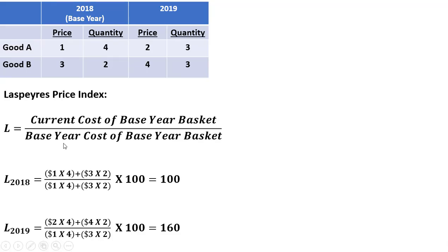And then in the denominator, it's the base year cost of the base year basket. In the base year, the prices are $1 and $3, and this base year basket doesn't change — it'll always be a quantity of 4 and 2 for good A and good B respectively. So we get $10 in the numerator and $10 in the denominator, giving us an index of 100. With price indices, the base year is always normalized to 100.